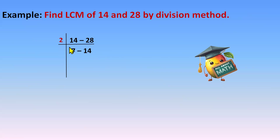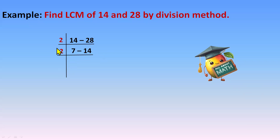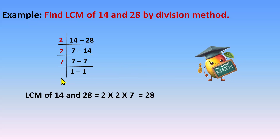Now check 14 and 7 again with 2. 14 comes in the 2 table at 7, so we write 2 again. But 7 does not come in the 2 table, so 7 is written as it is. Then 7 divided by 7 gives 1, so we write 7 on the left and get 1. Now all numbers in the row are 1, so LCM of 14 and 28 = 2 × 2 × 7 = 28.